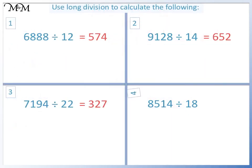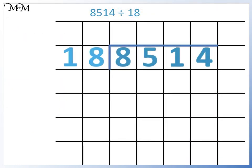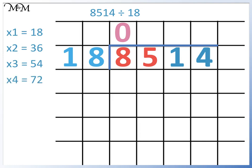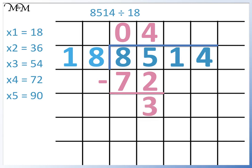Question 4: 8,514 divided by 18. 18 doesn't divide into 8, so we will find 85 divided by 18. 18 times 1 is 18, times 2 is 36, times 3 is 54, times 4 is 72, times 5 is 90. 72 is the closest to 85 without going over, so 85 divided by 18 is 4. We subtract 72 from 85 to find the remainder: 5 take away 2 equals 3, and 8 take away 7 equals 1. We bring down the 1.